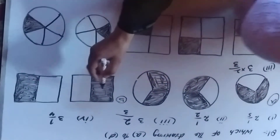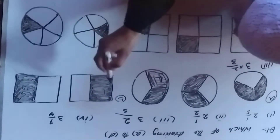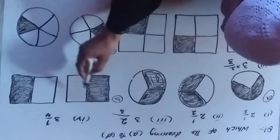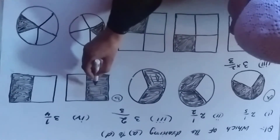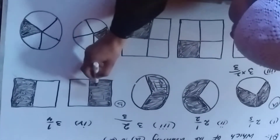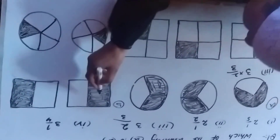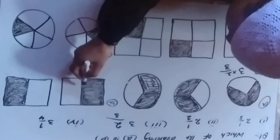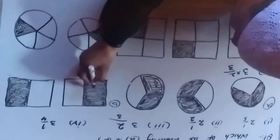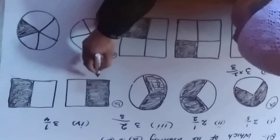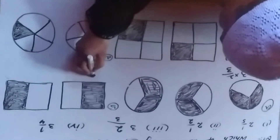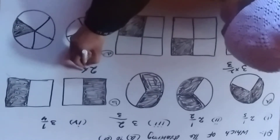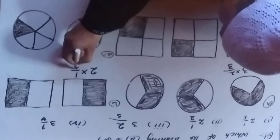Part number two: we have two circles — one, two. We have two squares — one, two. One square, one square. We have two squares. There are two squares.